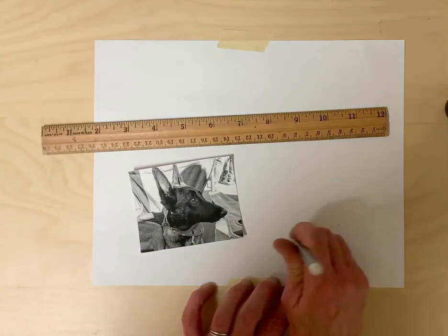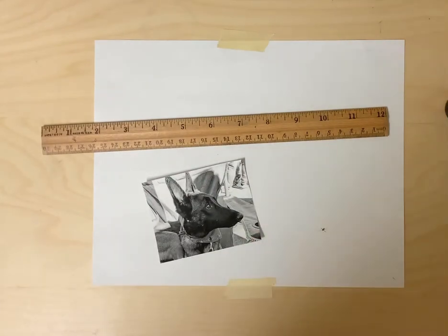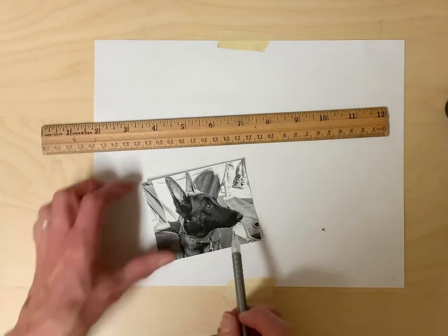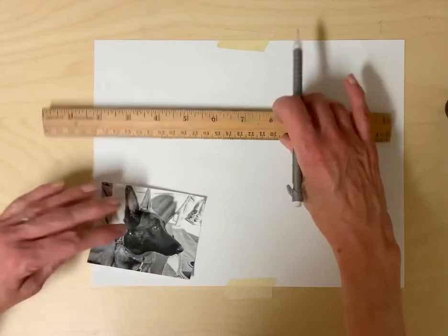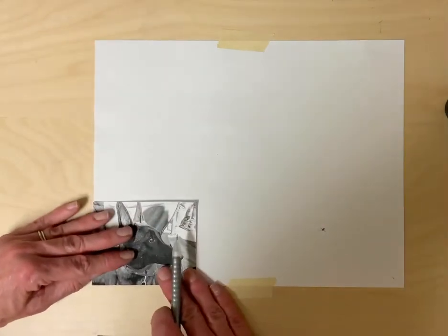So I can erase this and find a second point. This time I'm going to choose where the dog's bandana meets the face. Do it again.